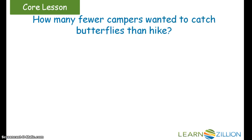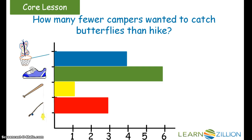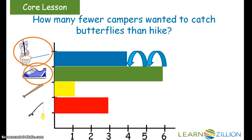How many fewer campers wanted to catch butterflies than hike? Looking at my bar graph, I see that four campers wanted to catch butterflies and six campers wanted to hike. So here I would have to go from the number of people that wanted to hike back to the number of people that wanted to catch butterflies. To get from six to four, I go back two — that's the same as saying six minus four equals two. So two fewer campers wanted to catch butterflies than hike.